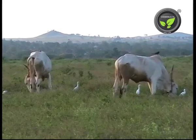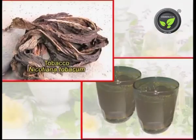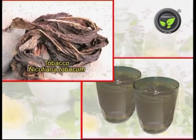Ingredient: Tobacco. Boil 250 grams of tobacco in 2 liters of water. Filter the decoction and spray it onto the body of the animal. Ticks will drop after washing the body the next day.